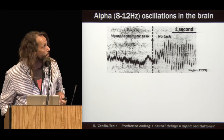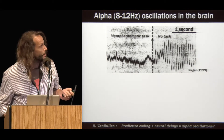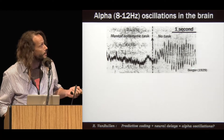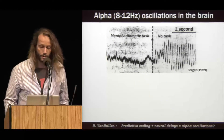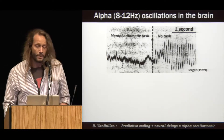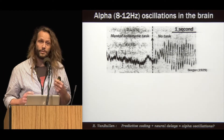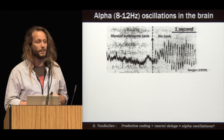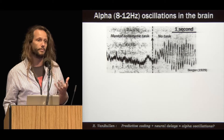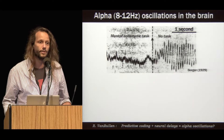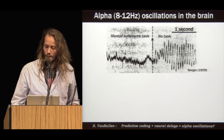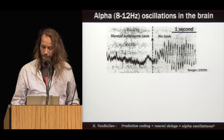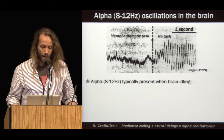Here is an example — one of the first EEG recordings made by Hans Berger in 1929. But even though alpha is so big, it has been mainly ignored by neuroscientists for decades because it tends to show a negative relation with perception and cognition.